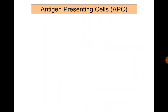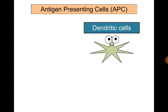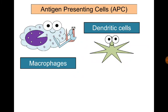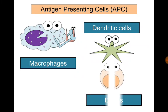Before illustrating the sequence of events, let's know about antigen-presenting cells. There are three: first, dendritic cells, which are the most important; macrophages; and B-lymphocytes.